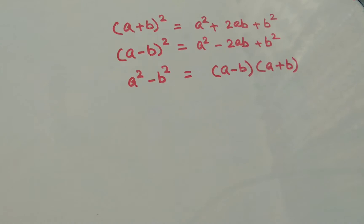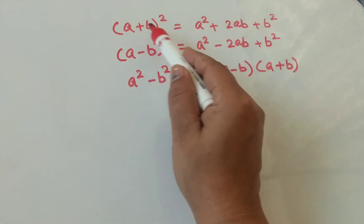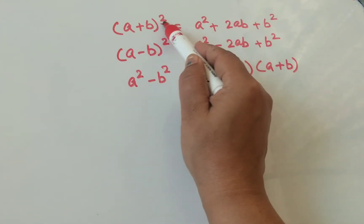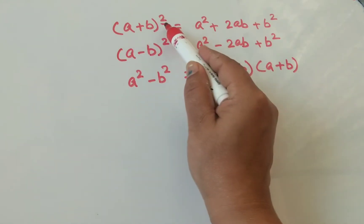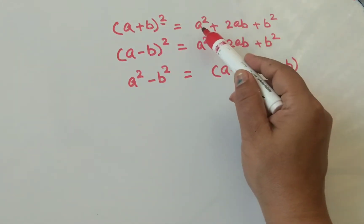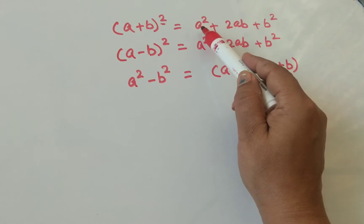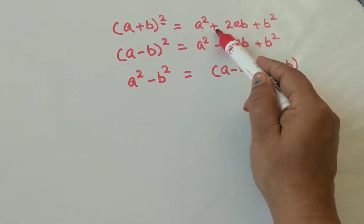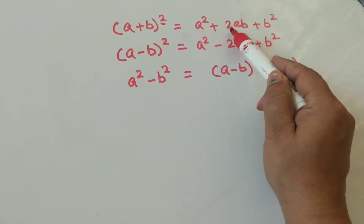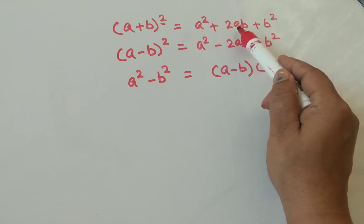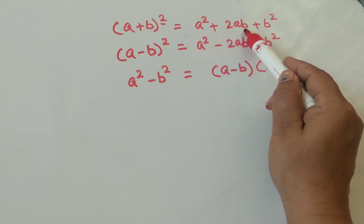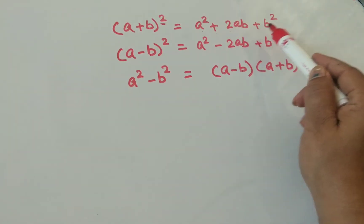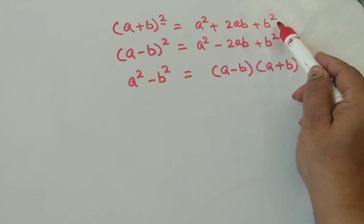First identity is (a + b) whole square. You have to keep this in mind — this is the whole square. When we open the whole square, the result we get is: a square plus 2 — we apply 2 from our side — and along with that, in the form of a product: a into b, plus b square.